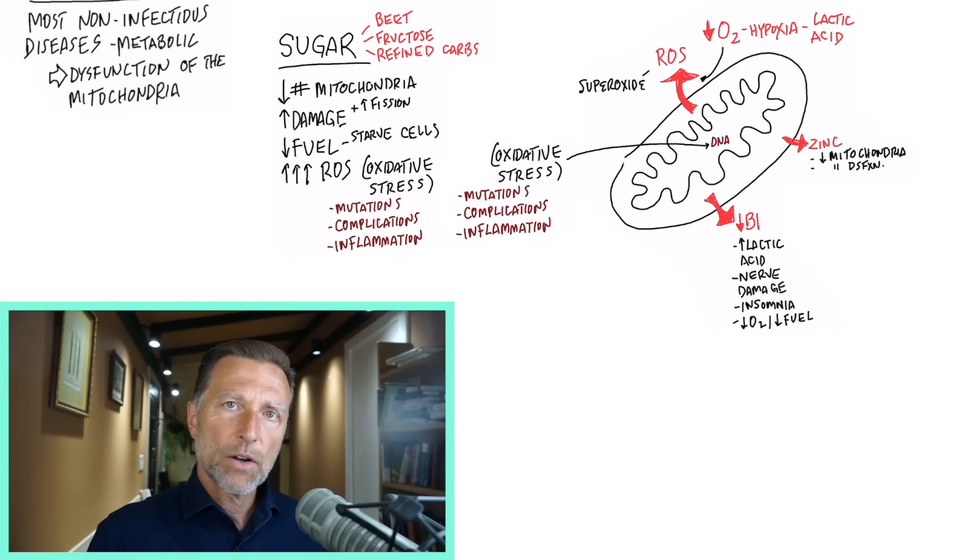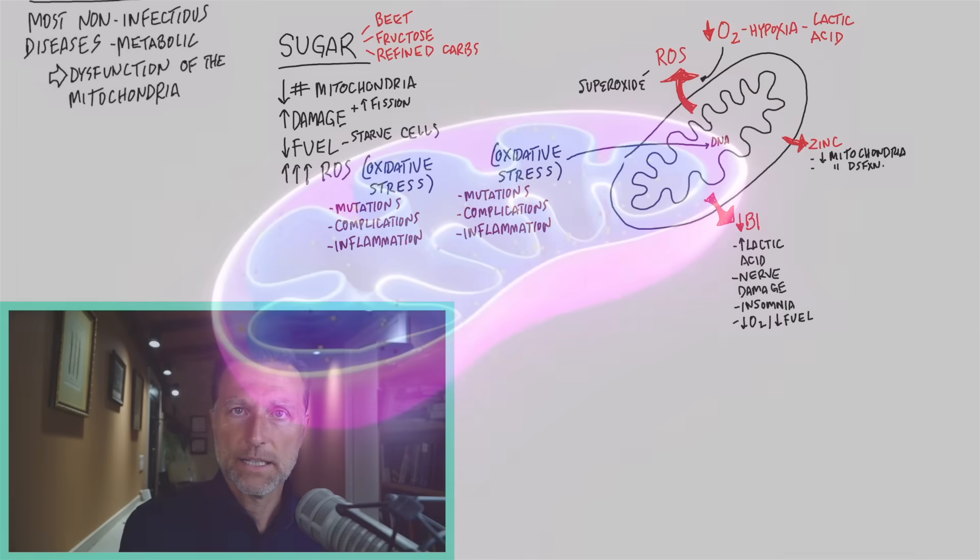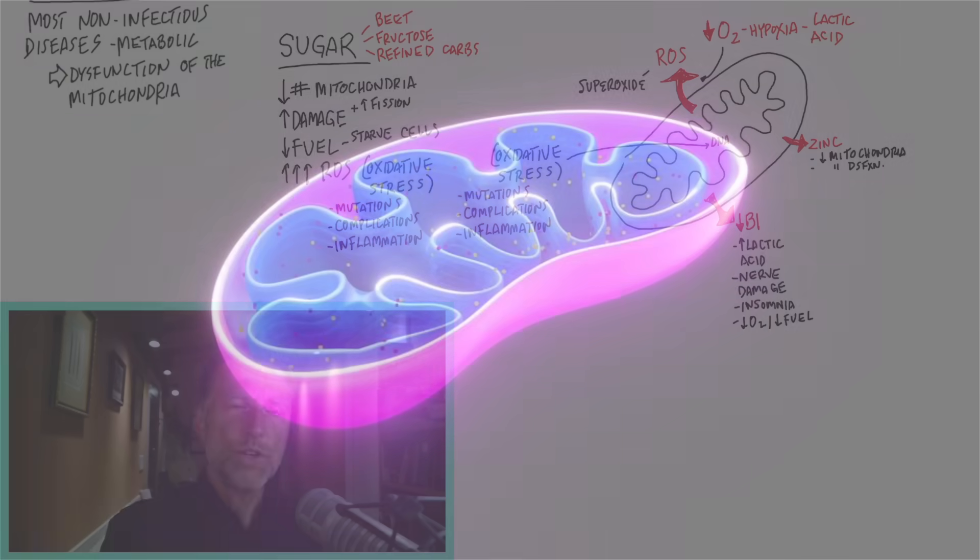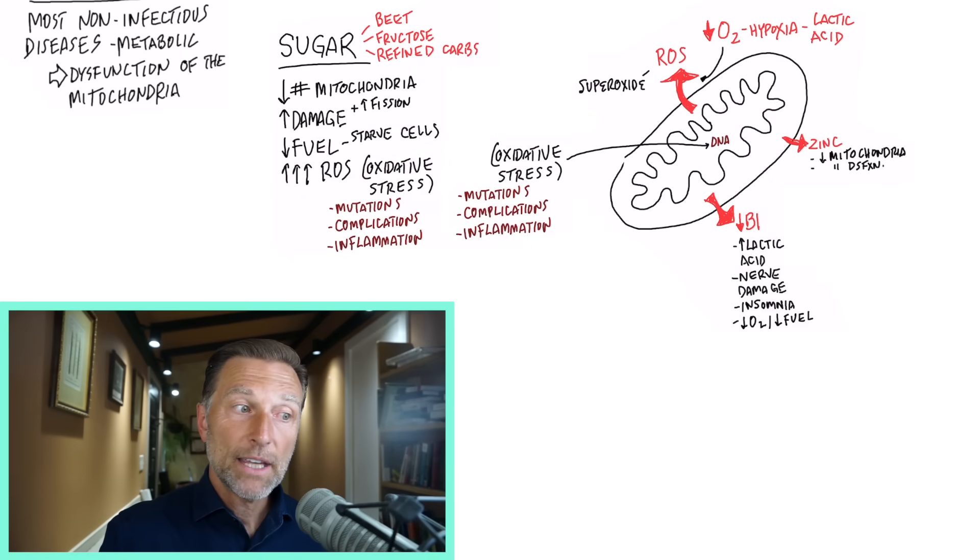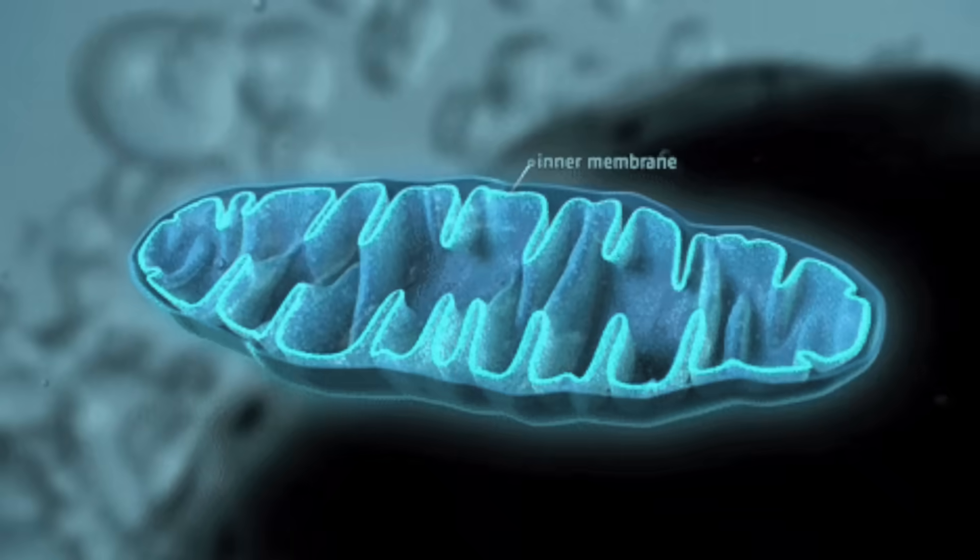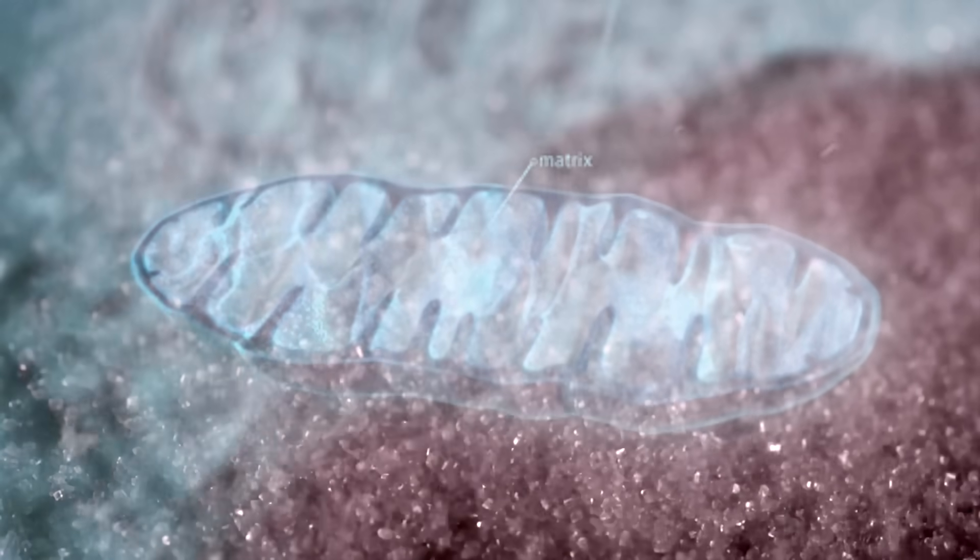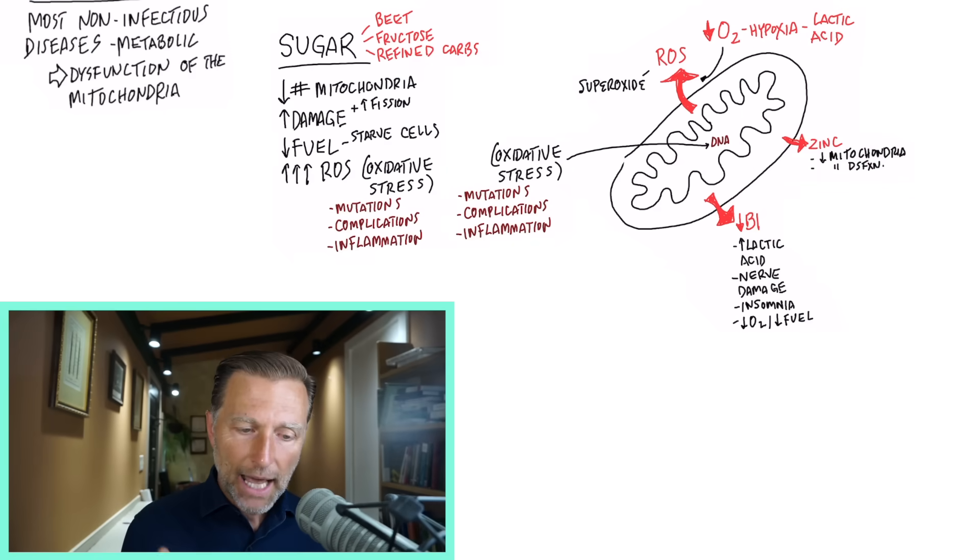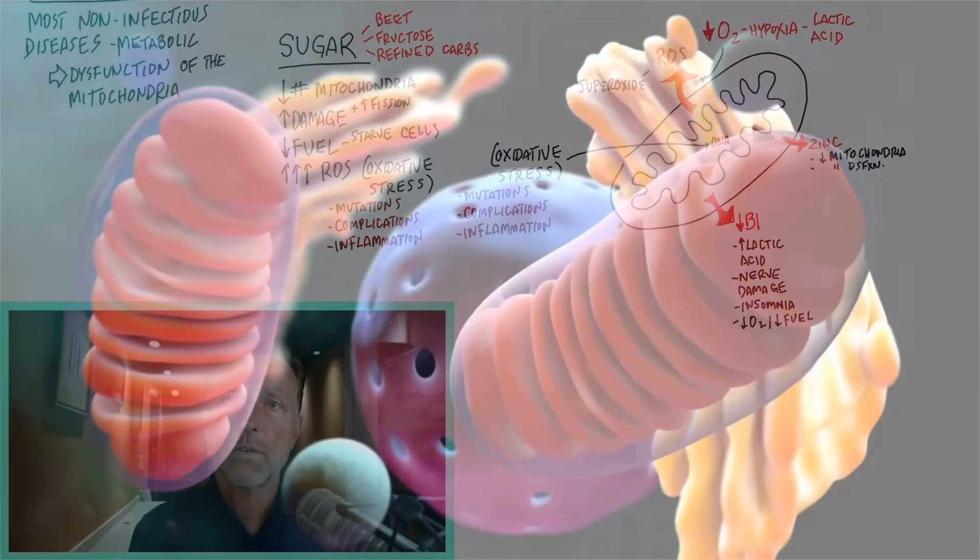And then another thing that gets depleted in the mitochondria from eating a lot of refined sugar is zinc. And zinc is also needed to make sure your mitochondria are bulletproofed or protected. And without zinc, you get dysfunctional mitochondria. So you just might want to think about the next time you eat that Krispy Kreme donut or that candy bar. You have to just be aware of what this sugar does to the deeper mitochondria in the cells that sets your body up for a cascade of issues down the road.